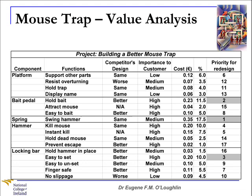In the next column, we look at the importance to customers. We can do this by doing a customer survey, setting up a customer focus group, or interviewing key customers to find out how important each identified function is. For example, the platform function 'support other parts' is of low importance to the customer, 'resist overturning' is of medium importance, and for the bait pedal, the function 'hold bait' is of very high importance to a customer.